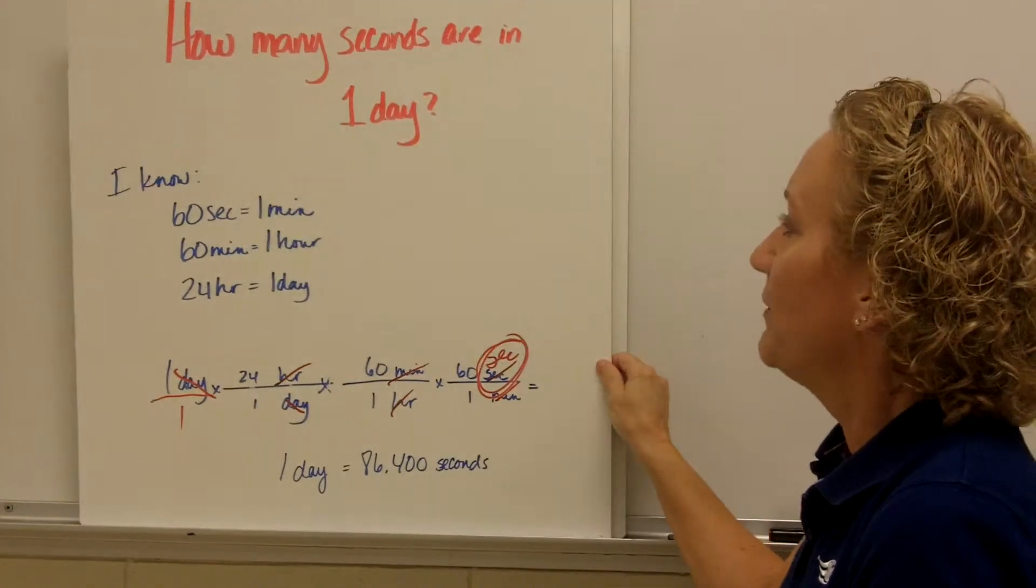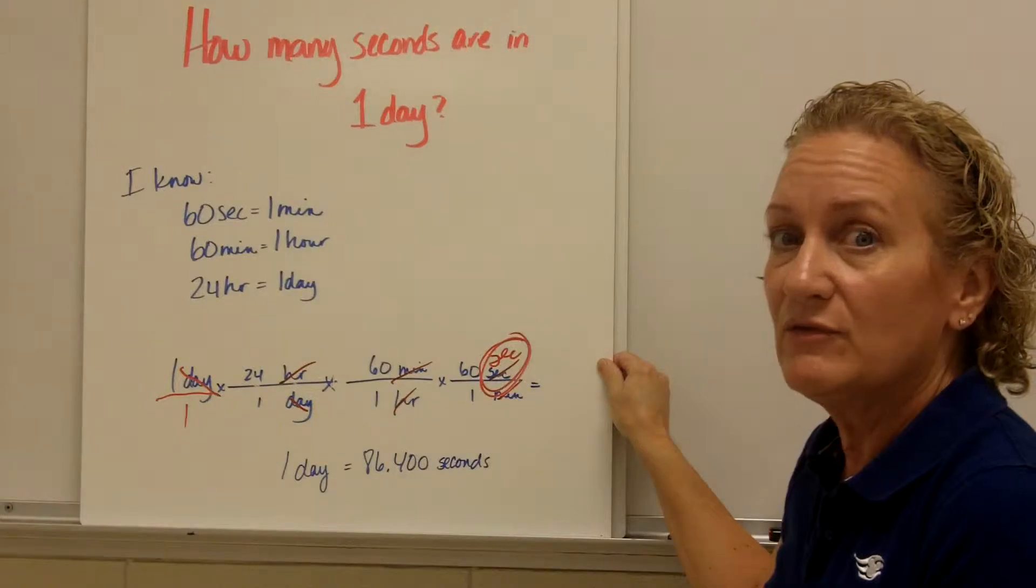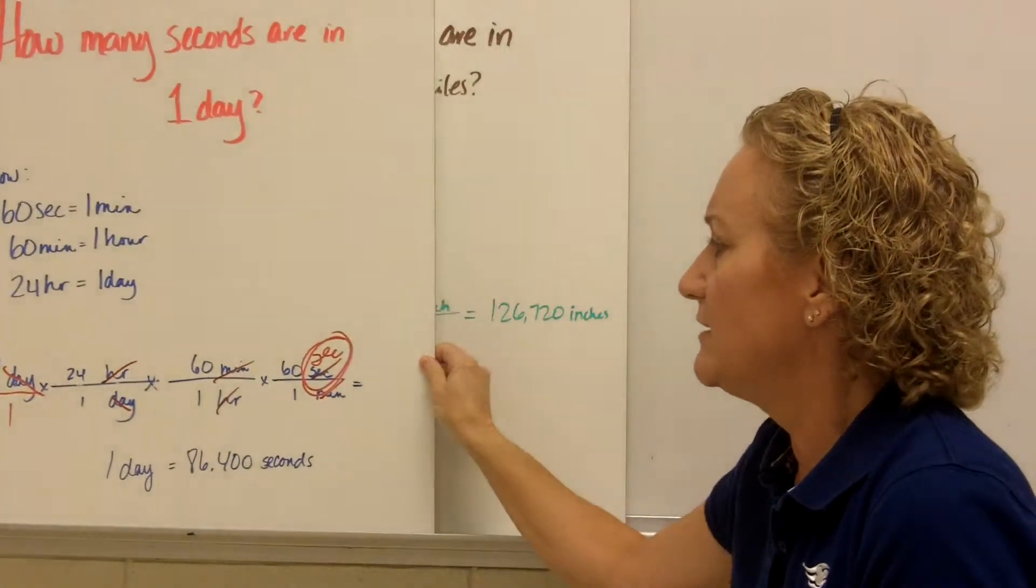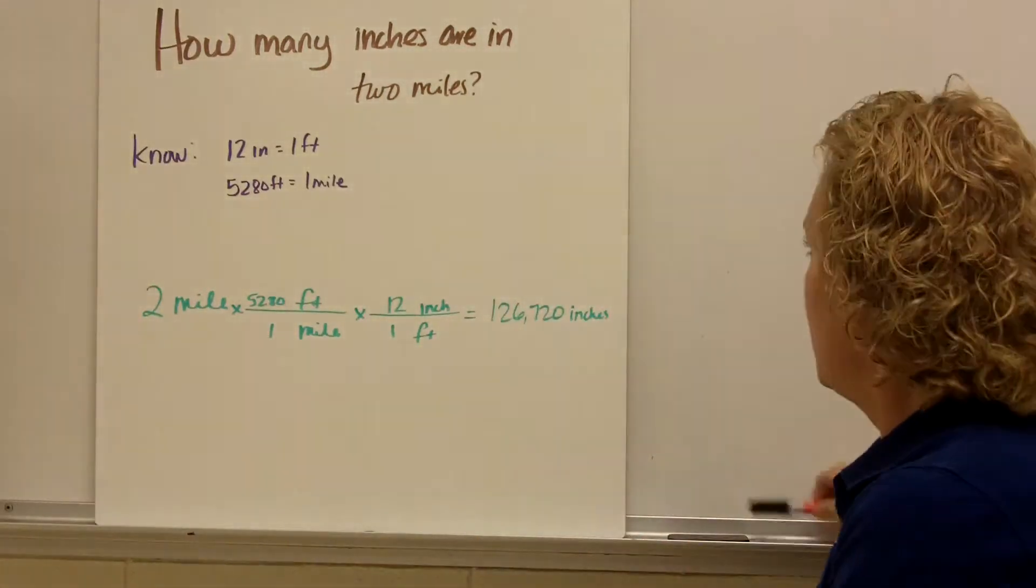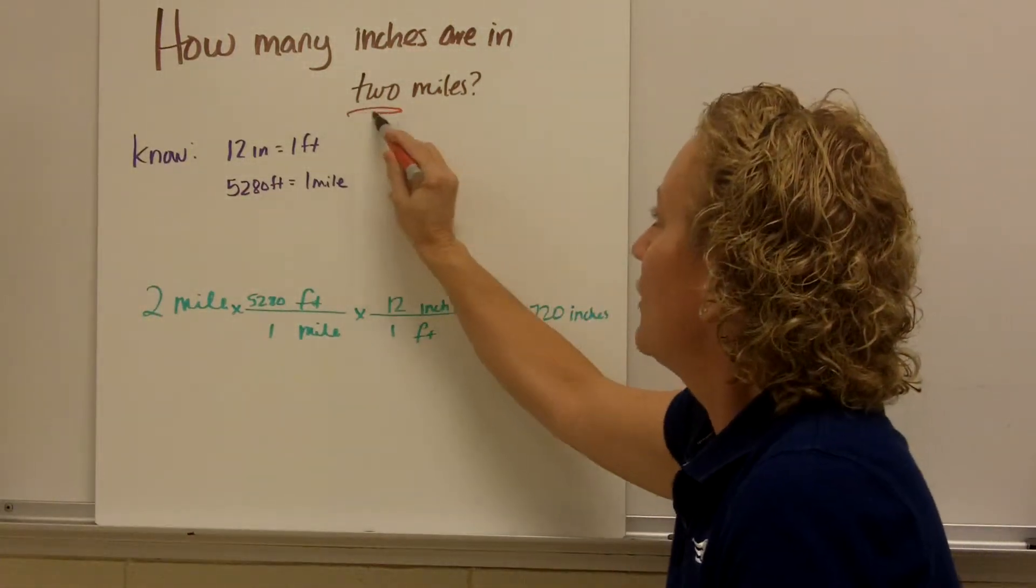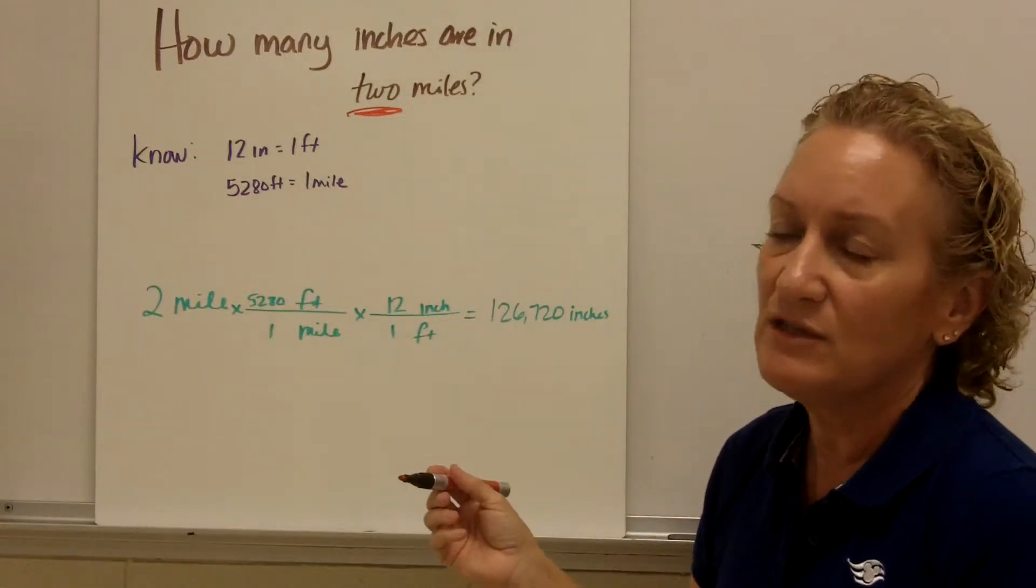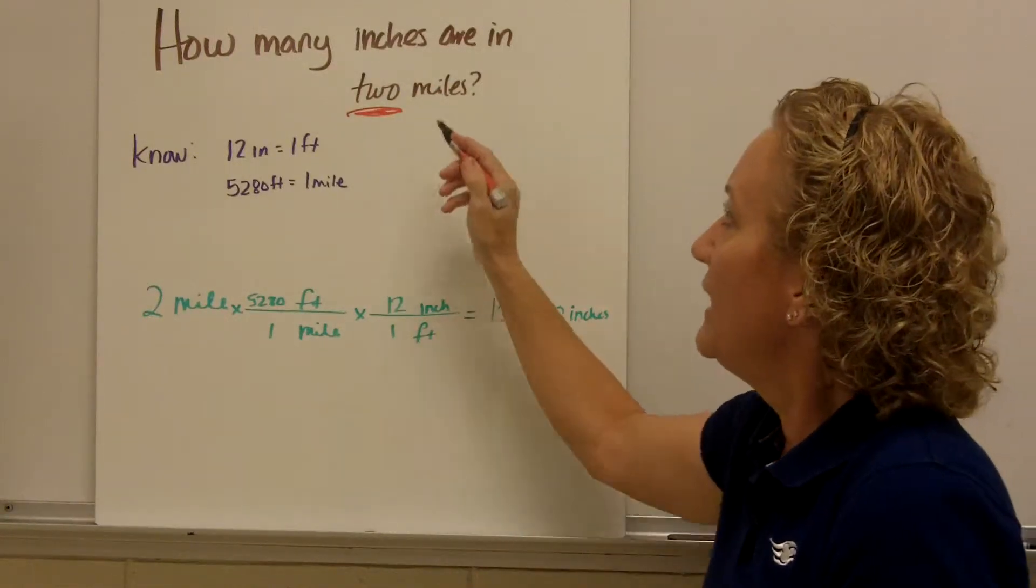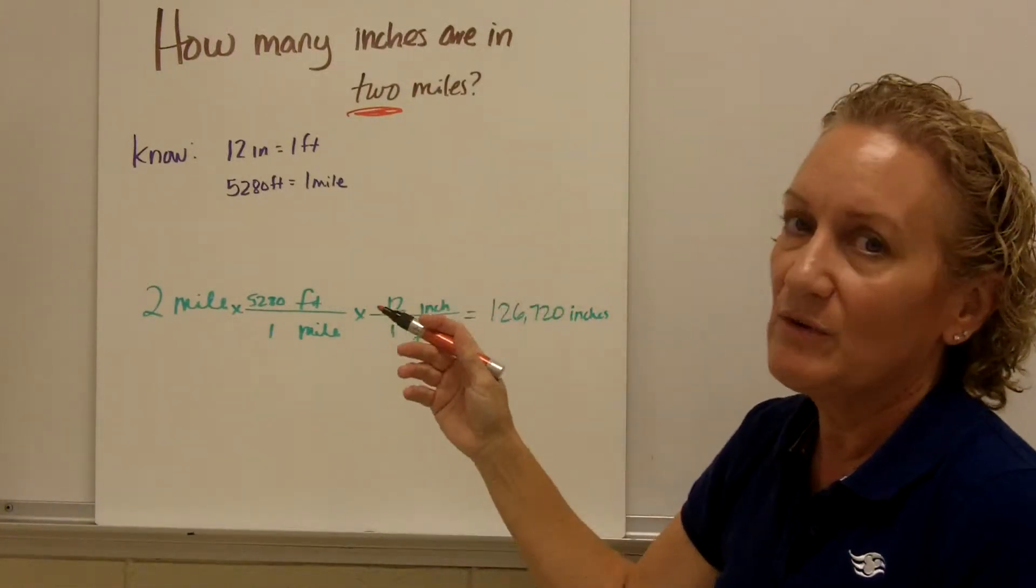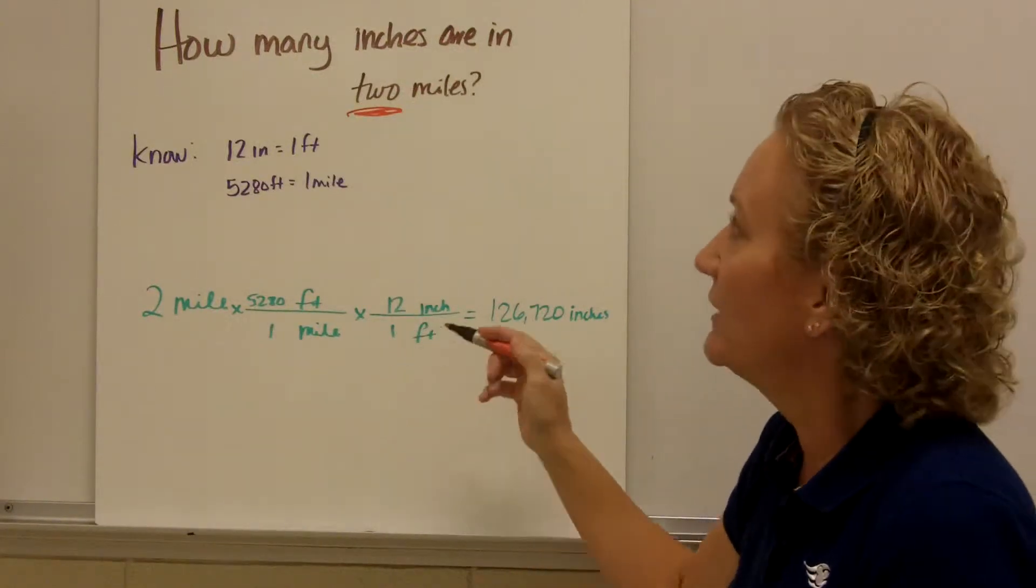Let's do another example. And feel free to stop the video at any time or rewind if you need to review this. If I went too fast, because I sometimes do that. All right. How many inches are in two miles. So I wanted you to know that it's not always one. Sometimes it's two. Sometimes it's ten. Sometimes it's 46.9. It's all kinds of numbers. But inches in two miles. I know I said we weren't going to use the English system, but this is just to show you how to do the conversions and dimensional analysis.